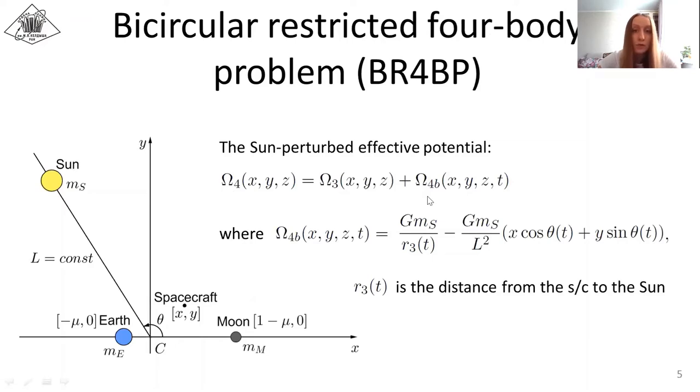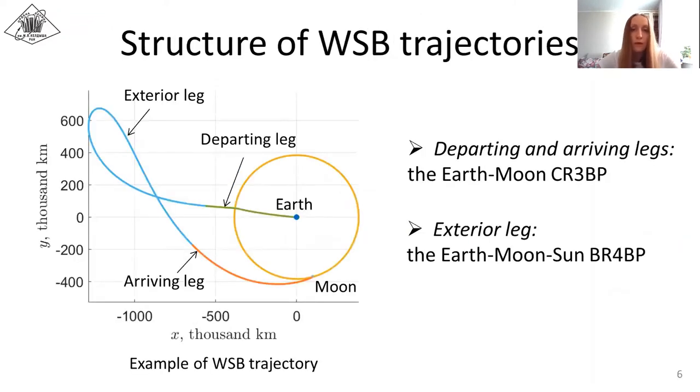The BR4BP model is one of the simplest models that represent the main properties of the WSB transfers. And so we designed the initial WSB transfers in the planar BR4BP model. Within the BR4BP model, each WSB trajectory consists of three legs: departing and arriving legs that lie in the vicinity of the Earth-Moon system, and so the spacecraft dynamics along these legs is described with high accuracy in the Earth-Moon CR3BP, and the exterior leg where the gravitational perturbation from the Sun plays a key role and should be taken into account.